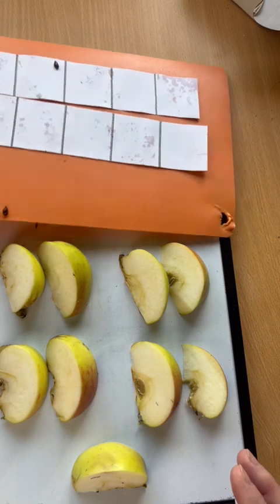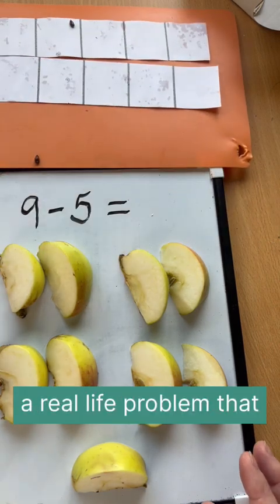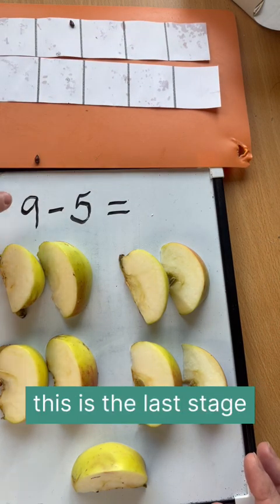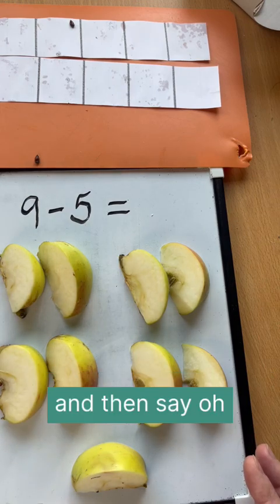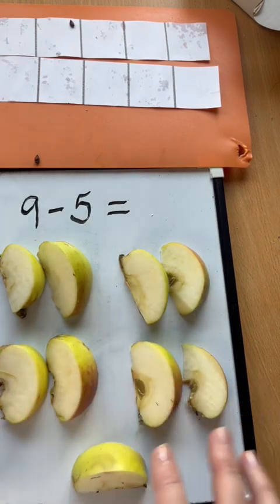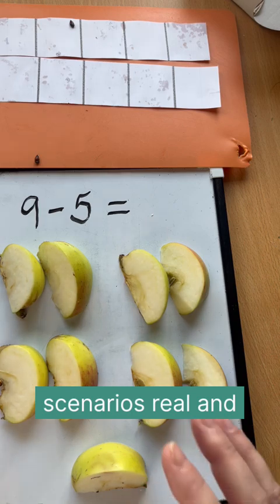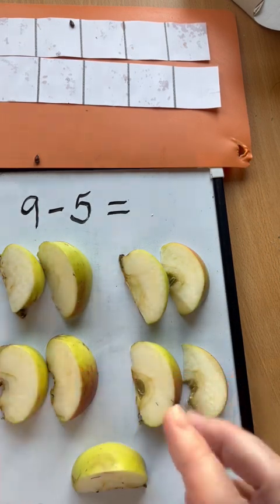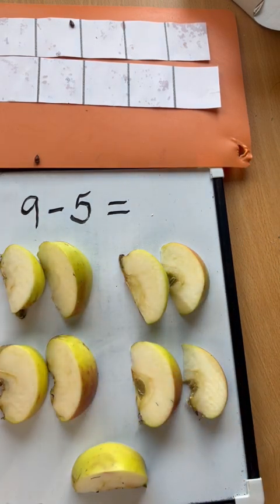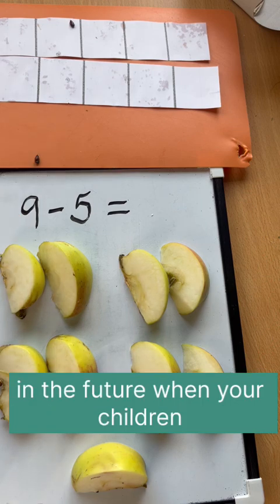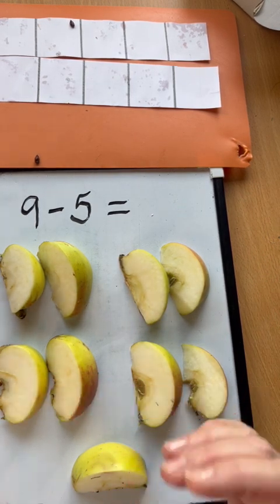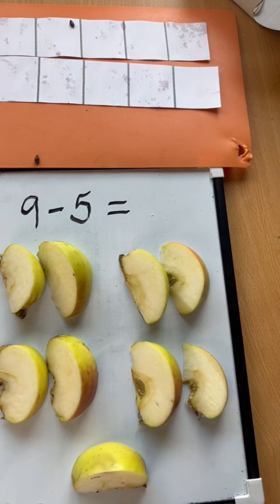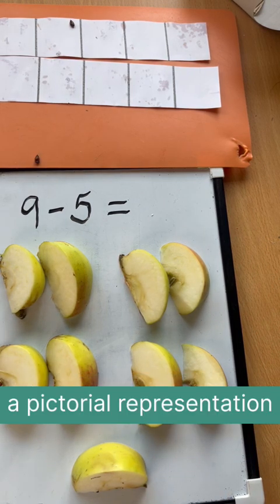So if we then think about a real-life problem that could represent this, so this is the last stage. This is not—we don't start with the calculation and then say, 'Oh, let's make it real.' We need to make these scenarios real and then build up through concrete, pictorial, and then to abstract. So in the future, when your children see abstract when that's appropriate, they can then connect back to these concrete experiences. And what I'm going to show you is a pictorial representation as well.